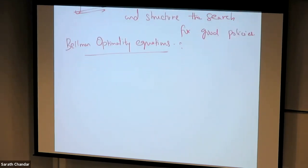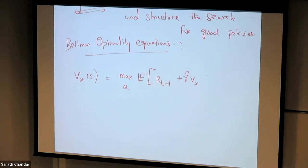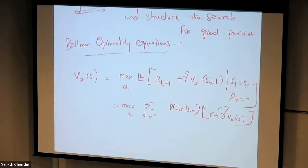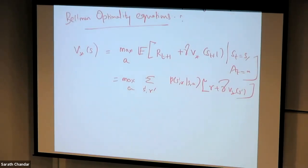V-star of s is given by max over a of the expected value of R_{t+1} plus gamma times V-star of S_{t+1}, given S_t equals s and A_t equals a. Expanded, it becomes max over a, summation over s' and r of P(s', r | s, a) times [r plus gamma times V-star of s']. I'm writing these equations again to make sure you remember them — they are central and we'll keep using Bellman equations again and again.